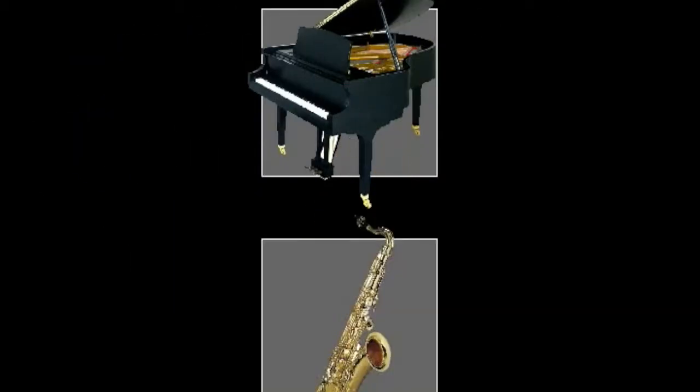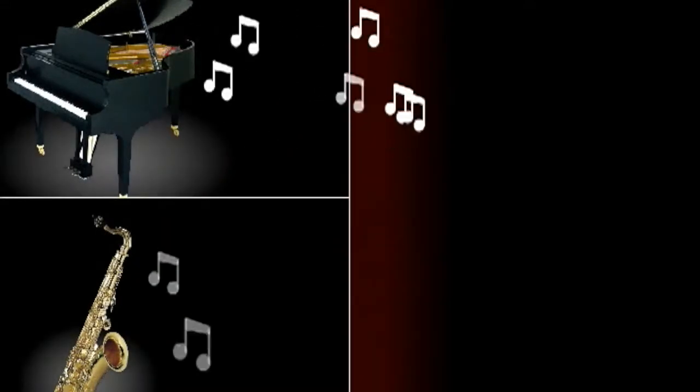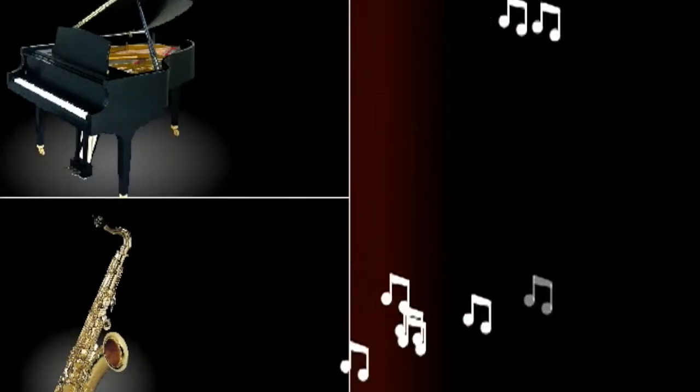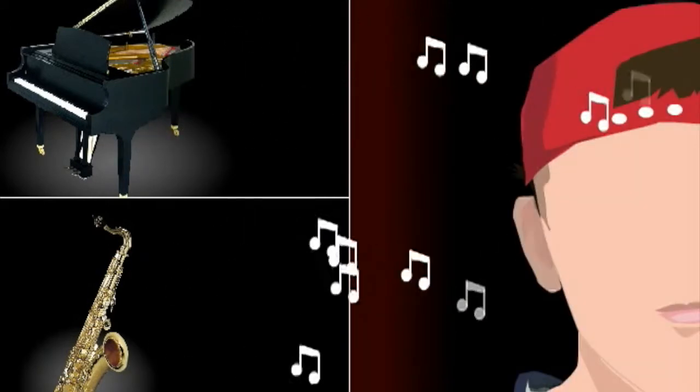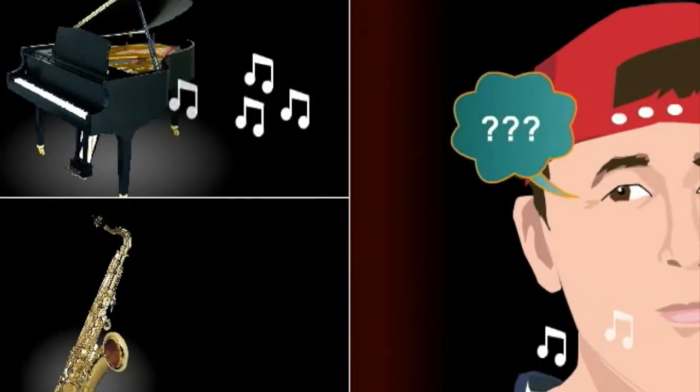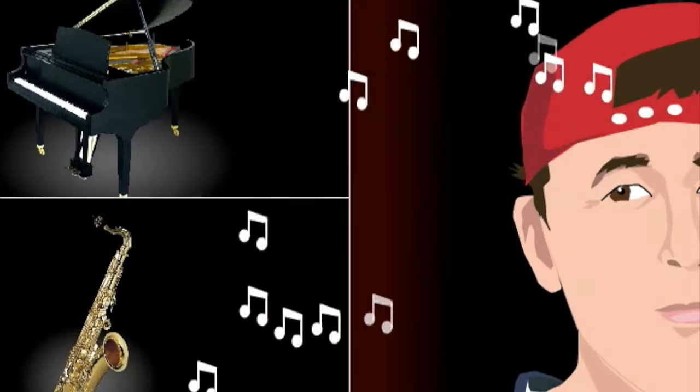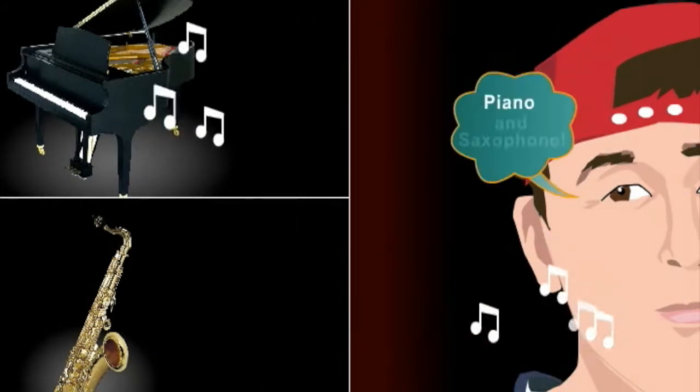Timbre can be described as the character of a sound. Two instruments playing the same frequency or note sound different because each has a different timbre. For example, a piano and a saxophone are both playing the note A440, which has a frequency of 440 hertz. Although the frequency is the same, the instrument's timbre tells us which instrument is the piano and which is the saxophone.